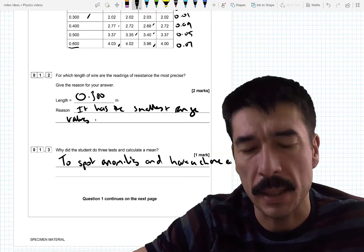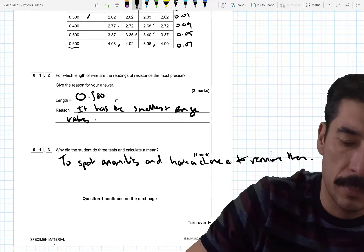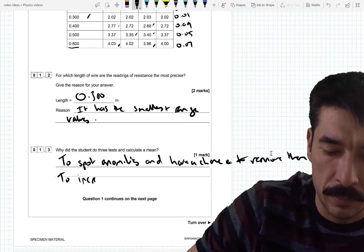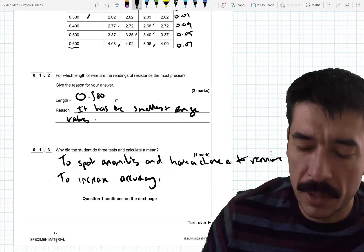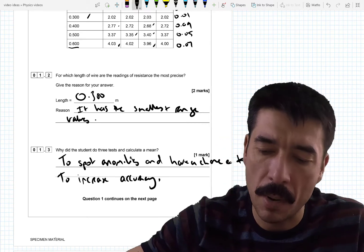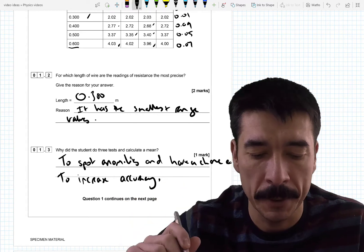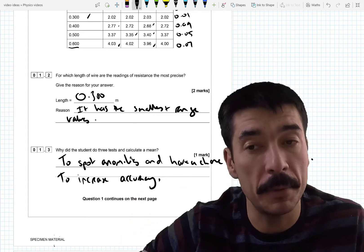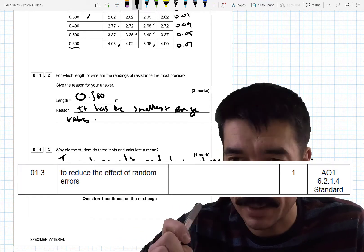It also would increase the accuracy of the results. Now actually I'm kind of committing a bit of a sin here. If it's only worth one mark and I've put down two things, I should really put down what I think is my best guess. My best option. Because if I put down two things and one of them is wrong, I could lose a mark for that. Now I'm going to come back to that.